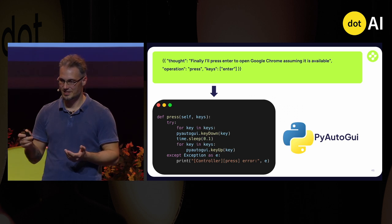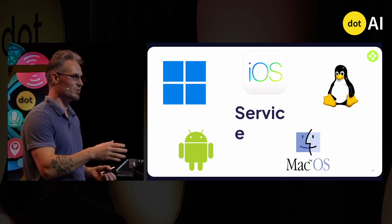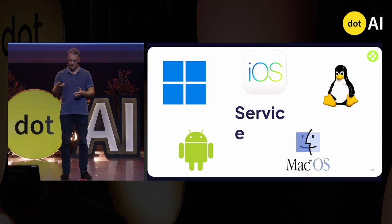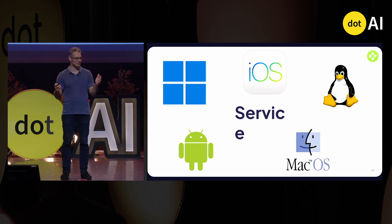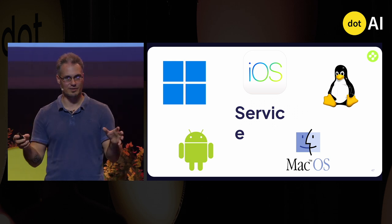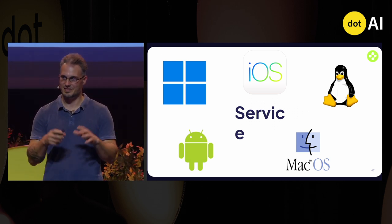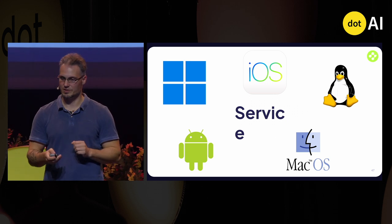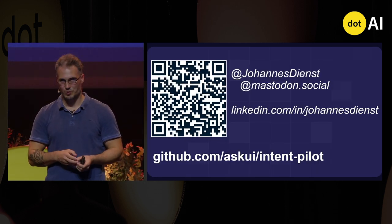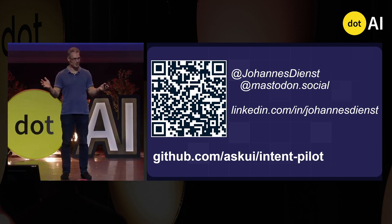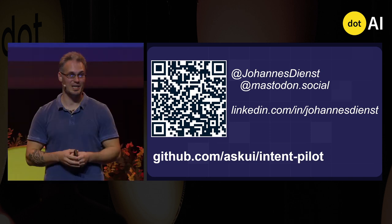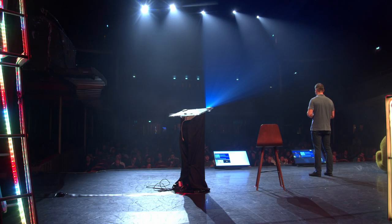We can do even better, because PyAutoGUI is just a library. In my opinion, it's very important that you have an embedded service in your operating system — and it doesn't matter which operating system — that can act on your behalf, just like Jarvis from Iron Man. You need a service that integrates and is able to do stuff on your operating system like you would. So I showed you all the tech you can use to build a Jarvis. What I want you to do now is build your own little Jarvis — you can start with the GitHub intent pilot from our company. Everything is open source. Have fun.